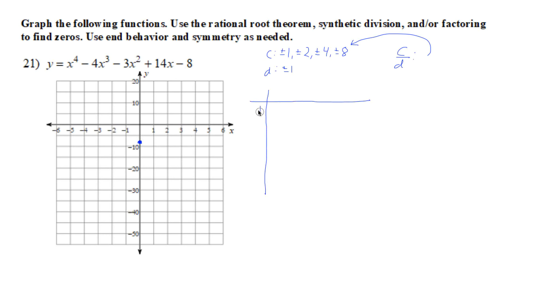We'll start with 1. Of course, list our coefficients: 1, negative 4, negative 3, 14, and negative 8. Bring down the 1. 1 times 1 is 1, negative 4 is negative 3. 1 times negative 3 plus negative 3 is negative 6. 1 times negative 6 plus 14 is 8.